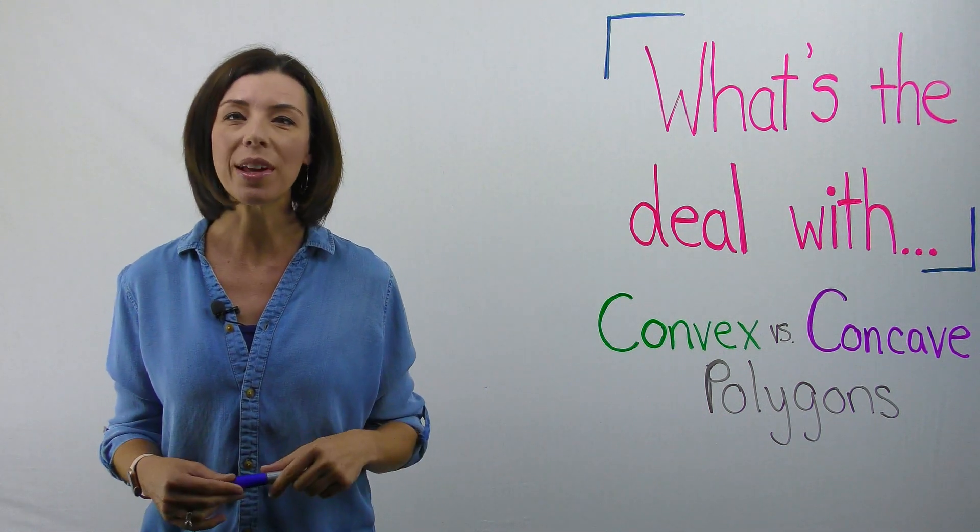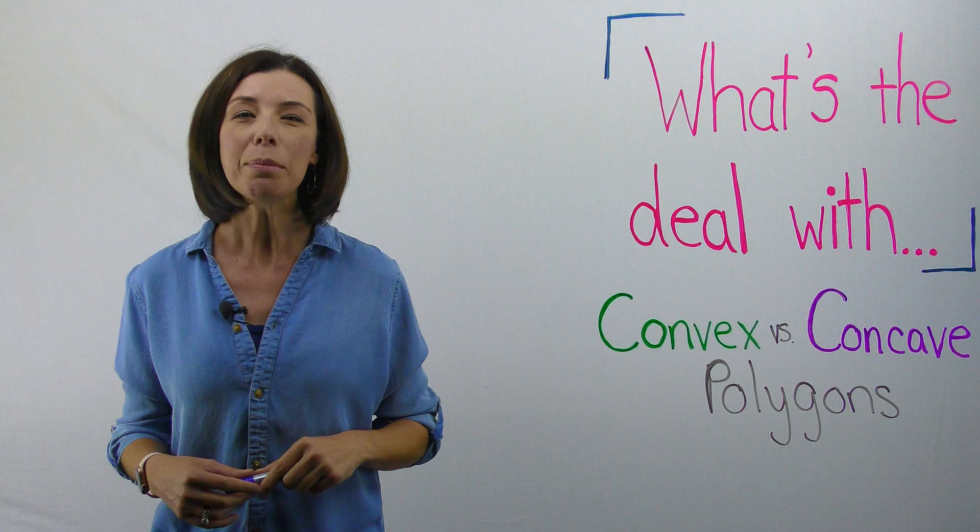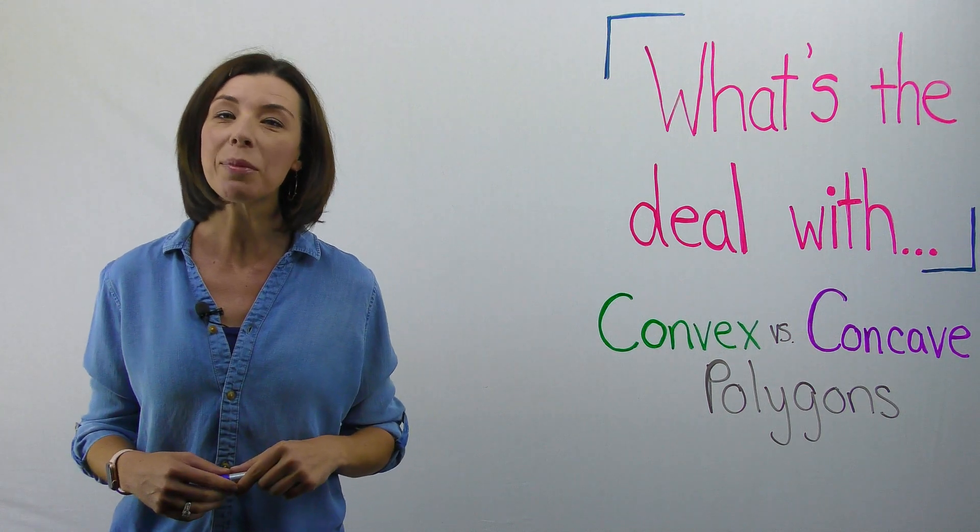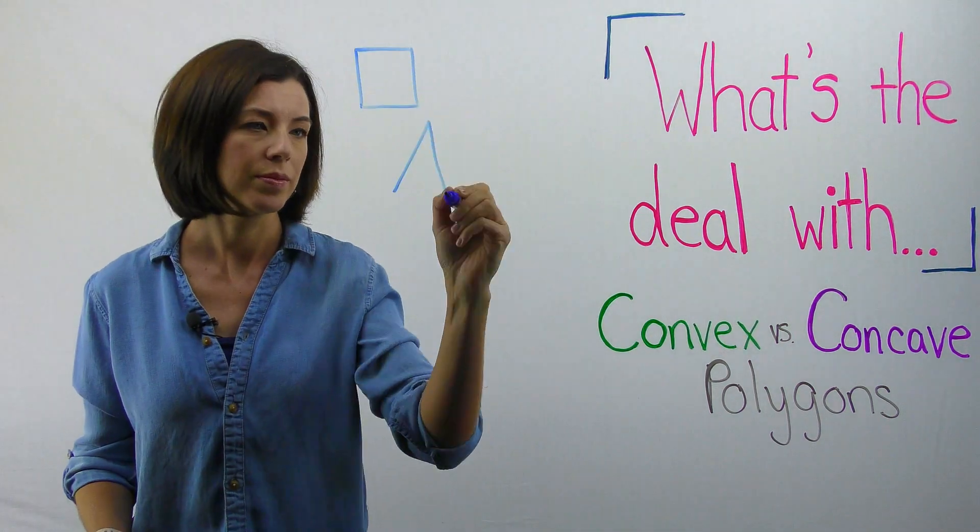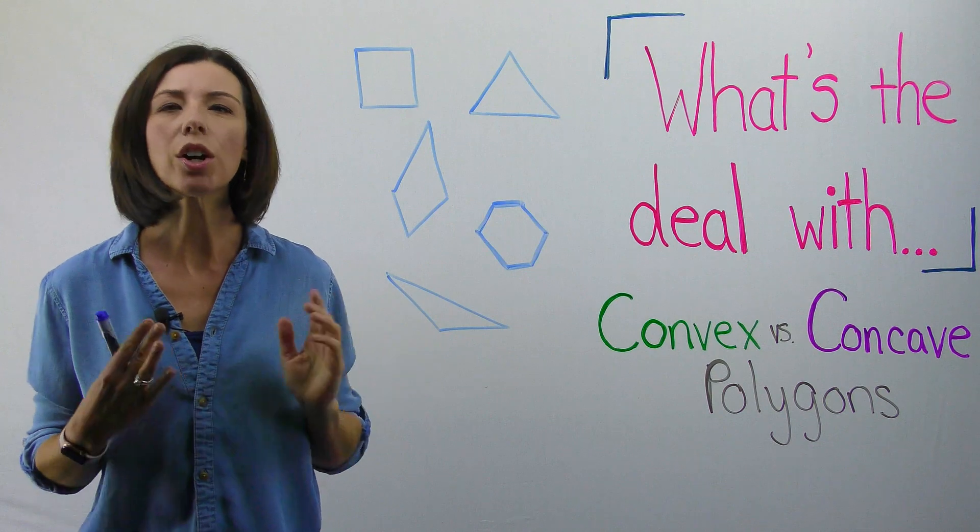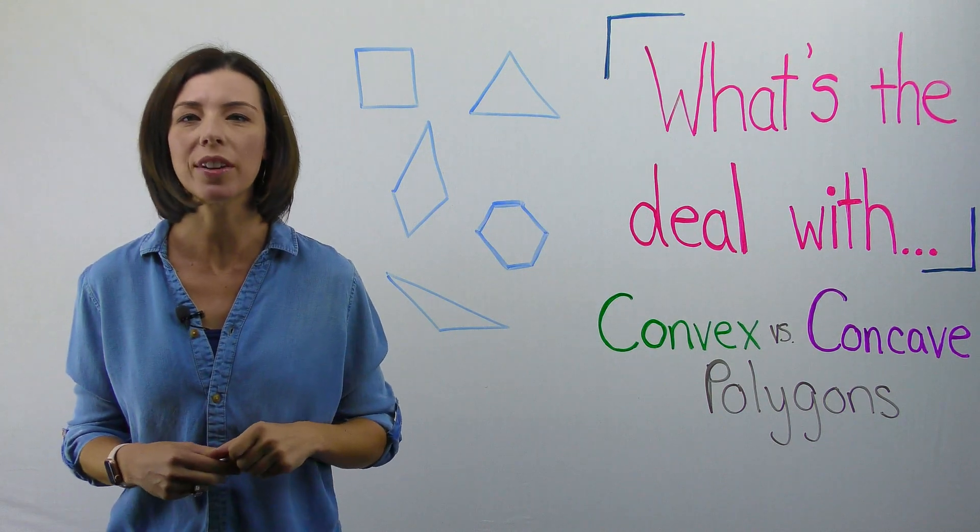Let's first start with convex polygons. Let me give you a few examples of some convex polygons. These are just a few examples of convex polygons.